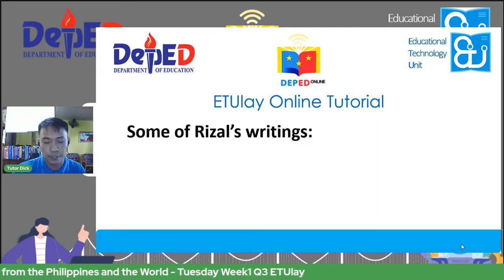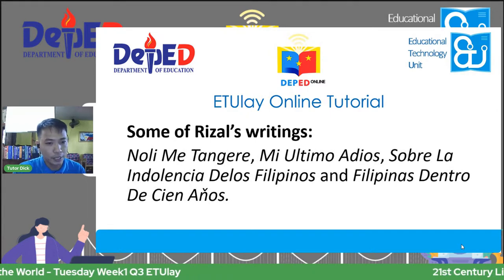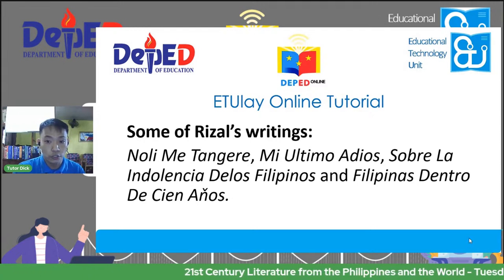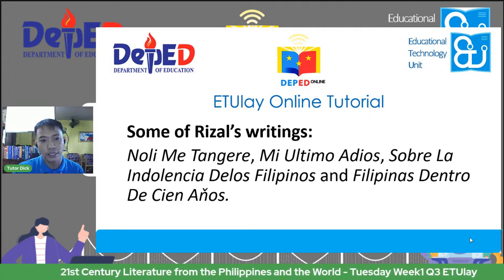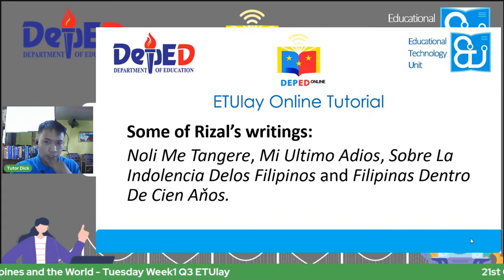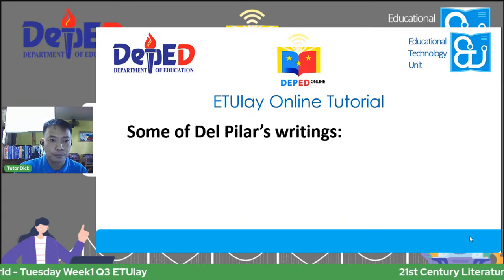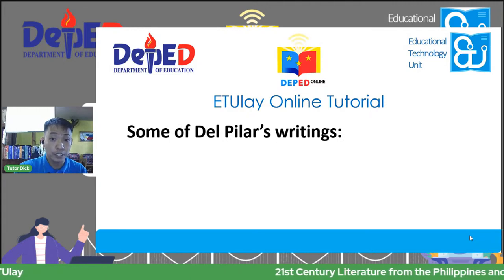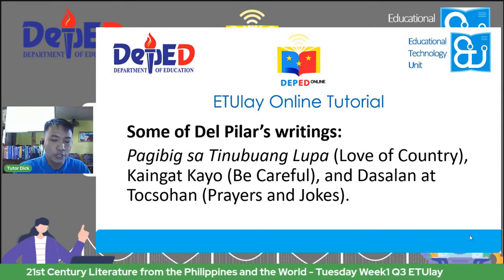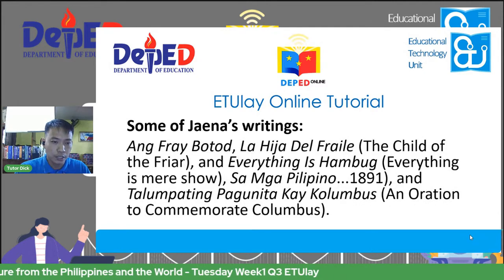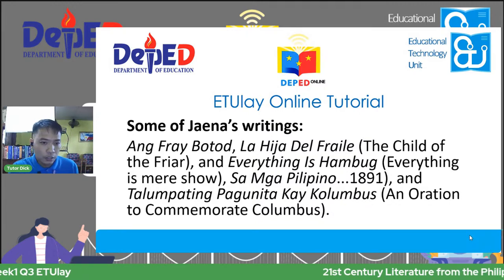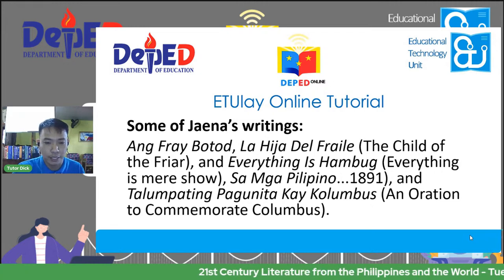Some of their writings include: from Rizal, Noli Me Tangere and its partner El Filibusterismo, his poem Mi Ultimo Adios, essays like Sobre la Indolencia de los Filipinos and Filipinas Dentro de Cien Anos. Some of Del Pilar's writings would be Pag-ibig sa Tinubuong Lupa (Love the Country), Kaingat Kayo, Dasalan at Tocsohan (Prayers and Jokes). And we have Graciano Lopez-Jaena's writings: Ang Friar Botod or the Friar Botod, which is a satirical writing about the Spanish Friars of that time.